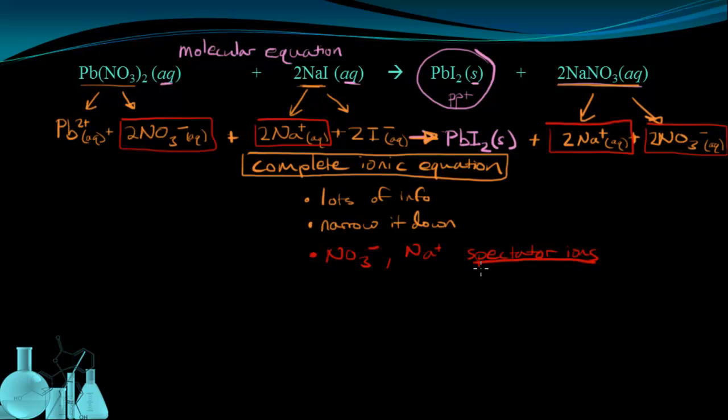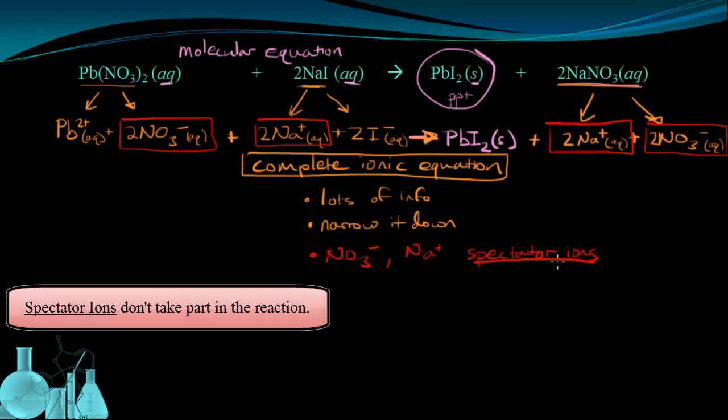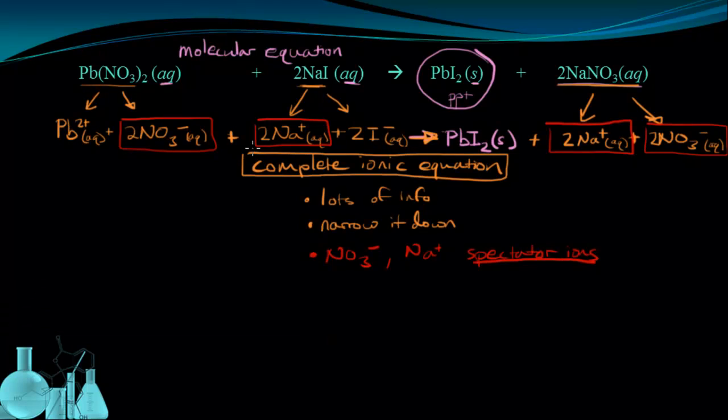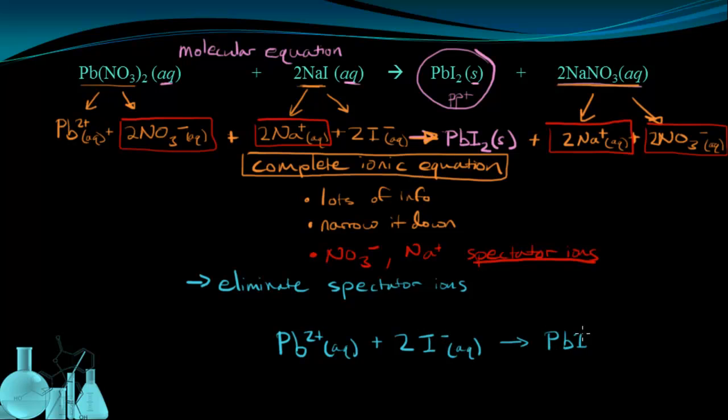So the nitrate and the sodium ions we call spectator ions. We call these spectator ions because they don't really take part in the reaction. And that should make sense because they show up on the product side exactly the same as they looked on the reactant side at the start of the reaction. So one of the useful things we can do is eliminate these spectator ions and rewrite the equation. So now if I eliminate those spectator ions out and I rewrite what's left over, I'm going to have Pb2+ plus two iodide ions yields PbI2, my insoluble precipitate. We call this the net ionic equation.